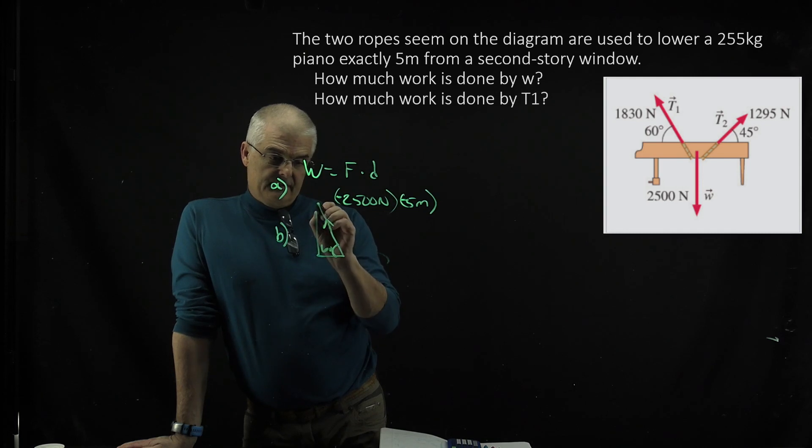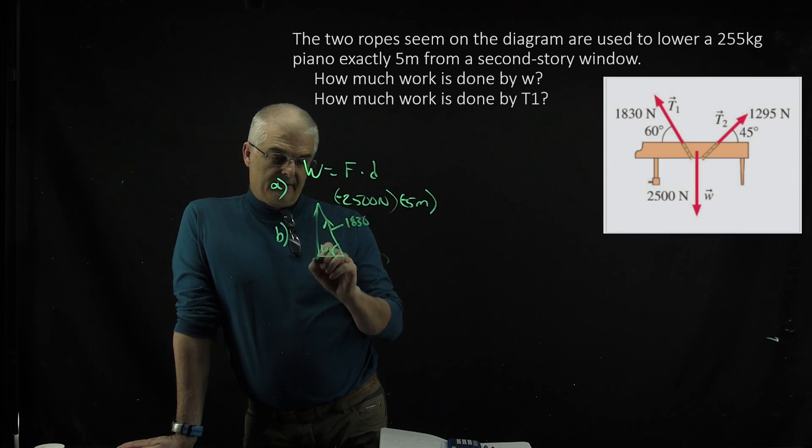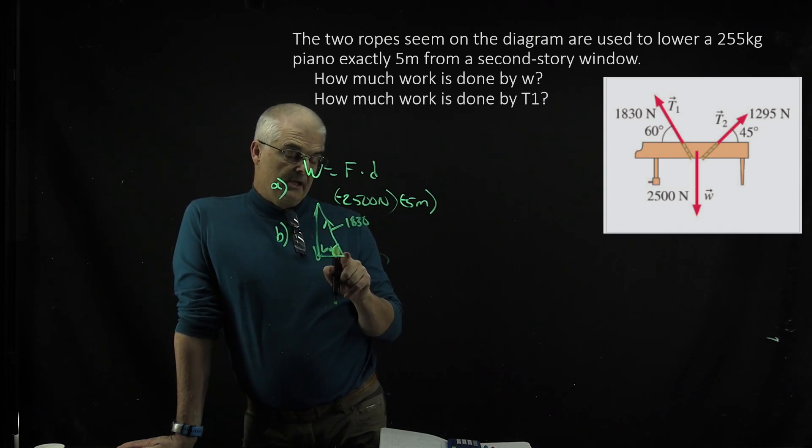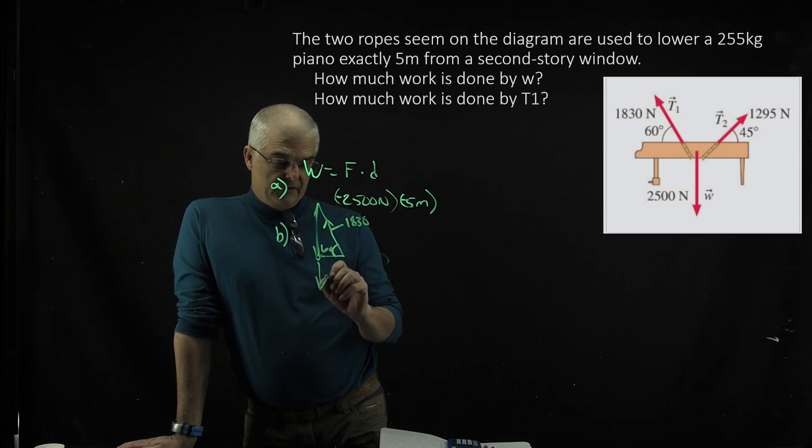So you're going to have to—you know what this tension is, 1830, right? And you're going to have to find now, in this case, the Fy, which is a sine function. And that's going to give you the force in the y direction.